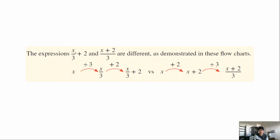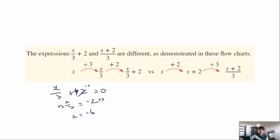The expressions x over 3 plus 2 and x plus 2 over 3 are different, even though they look pretty similar, as demonstrated in these flowcharts. For x over 3 plus 2 equals 0: we subtract 2 first giving x over 3 equals negative 2, then multiply both sides by 3 giving x equals negative 6. For x plus 2 over 3, because the plus 2 is directly next to the x on the same level of the fraction, we multiply by 3 first and then subtract 2.